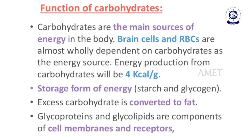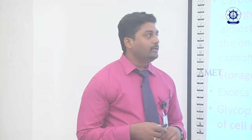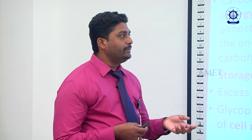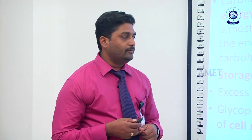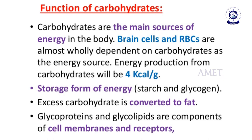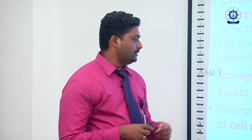The main functions of carbohydrates: they are the main source of energy in the body; brain cells and RBCs are almost wholly dependent on carbohydrates — without carbohydrates, their functions are completely absent. Energy production from carbohydrates is 4 kilocalories per gram. Storage forms of energy are starch and glycogen. Excess carbohydrates are converted to fat for future use. Glycoproteins and glycolipids are components of cell membranes and receptors.